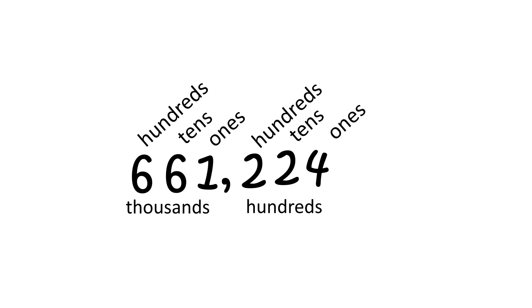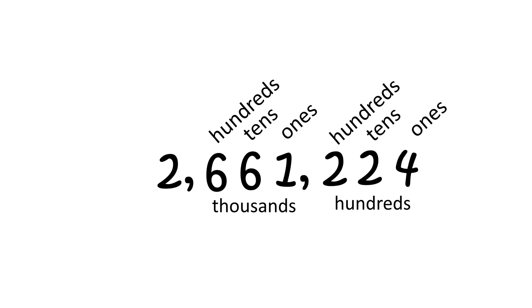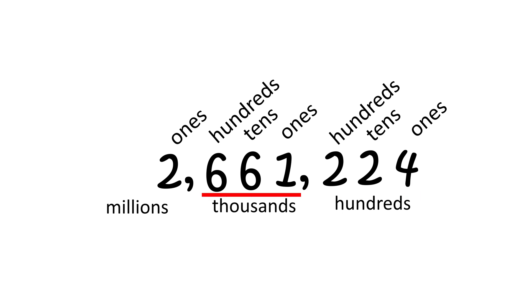We will explain why later. Now, what number value comes next? Let's add a 2 — that's right, it is in the 1,000,000 value. Let's review: the first 3 digits are in the 100s, the second 3 digits are in the 1000s, and the next 3 digits are in the millions.